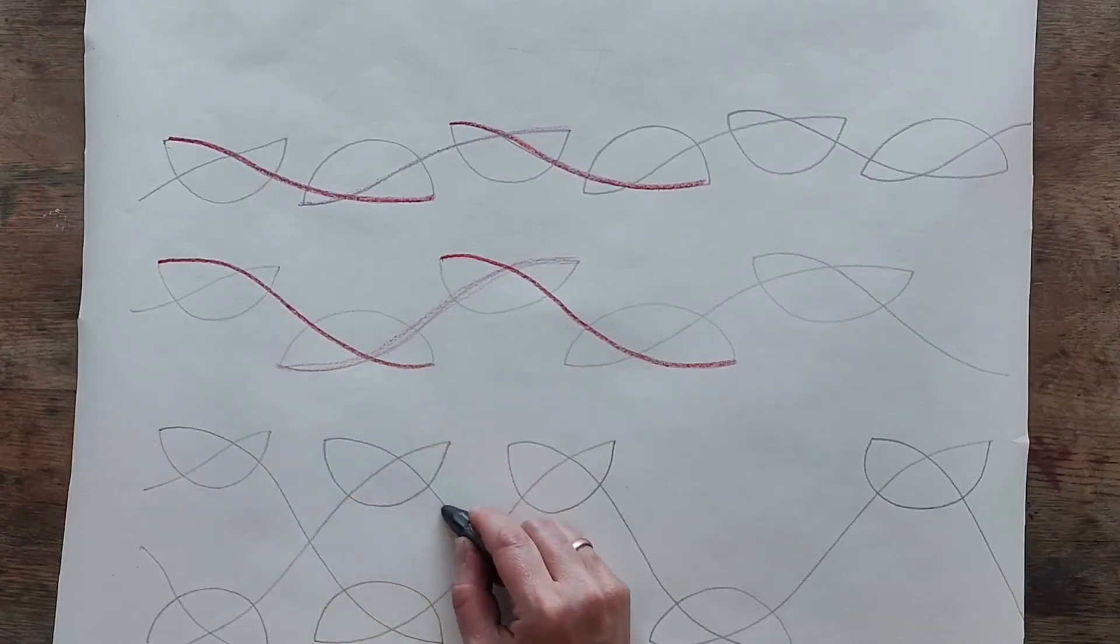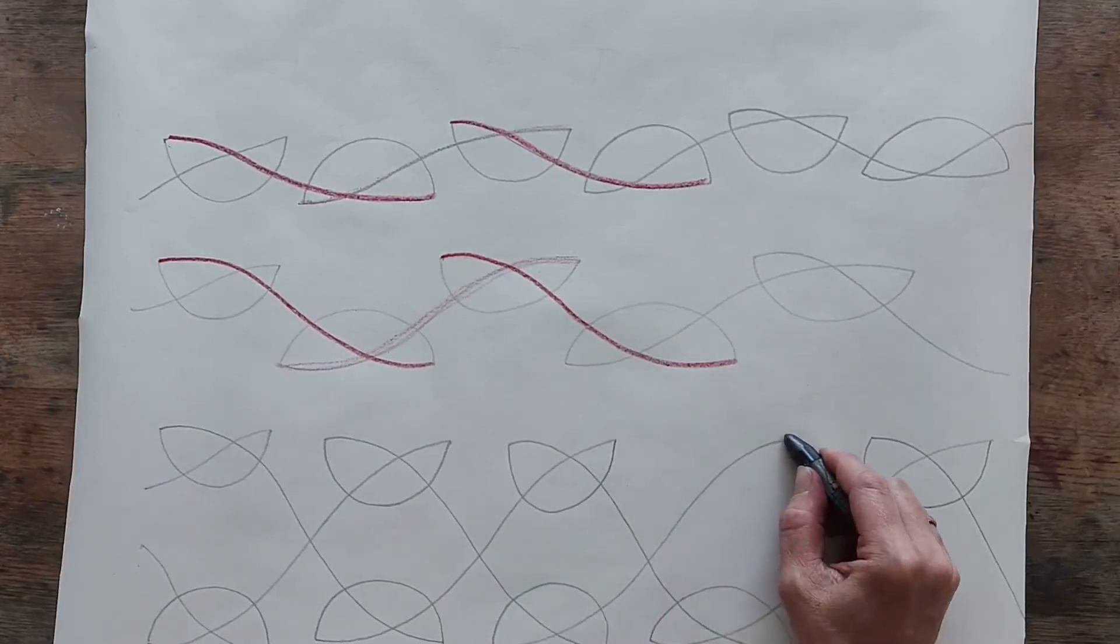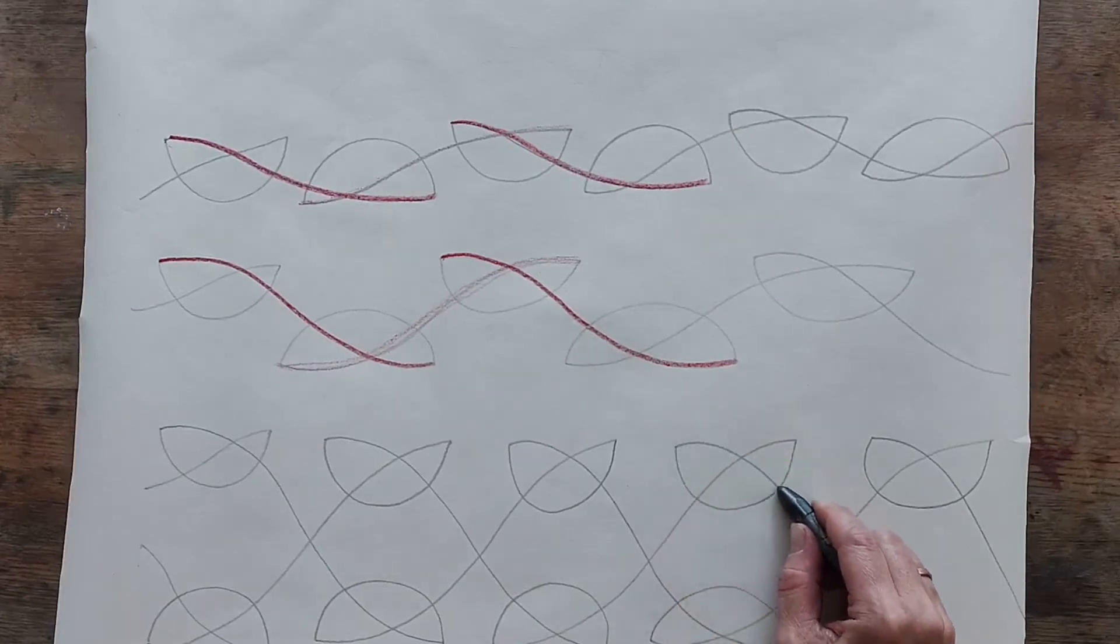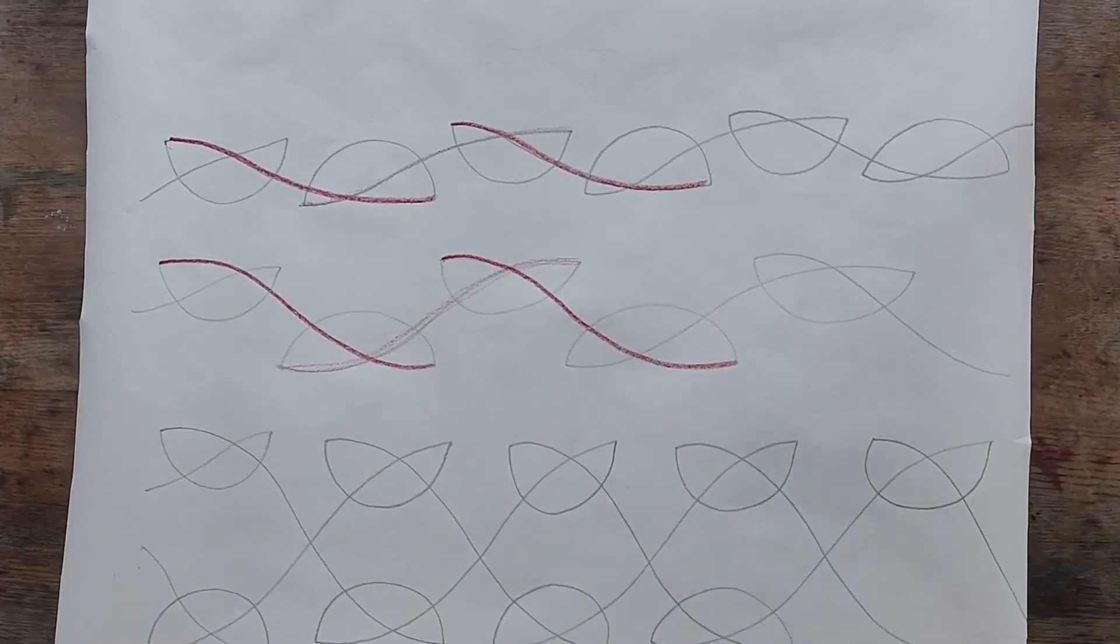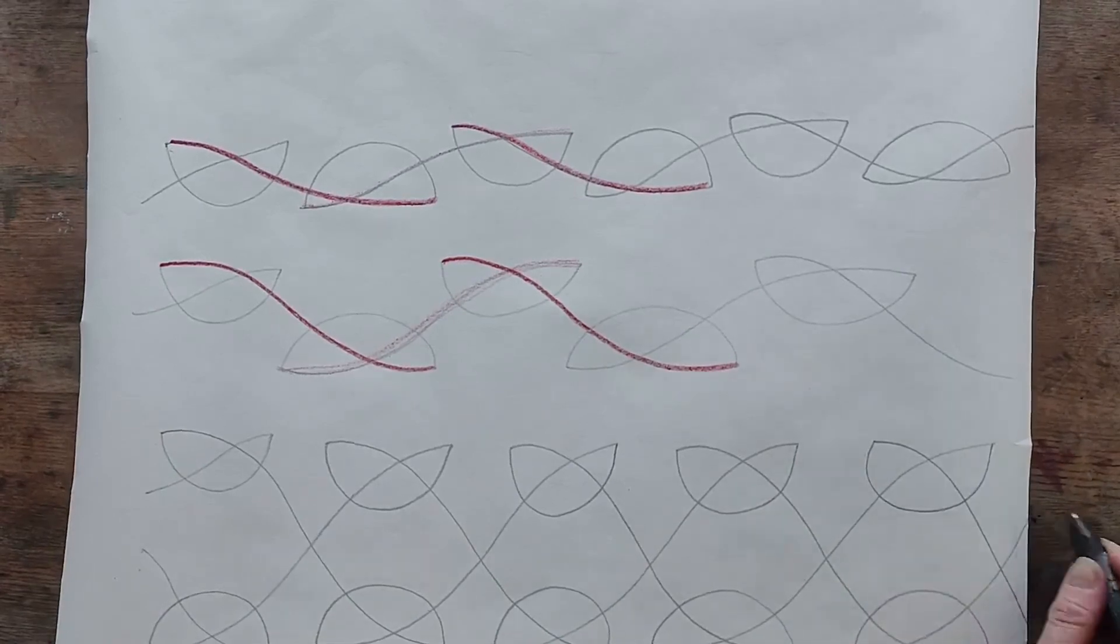Then we're coming a long way down and then creating our knot. A long way up and curving and then creating our knot. And then a long way down and creating our knot. And then up.